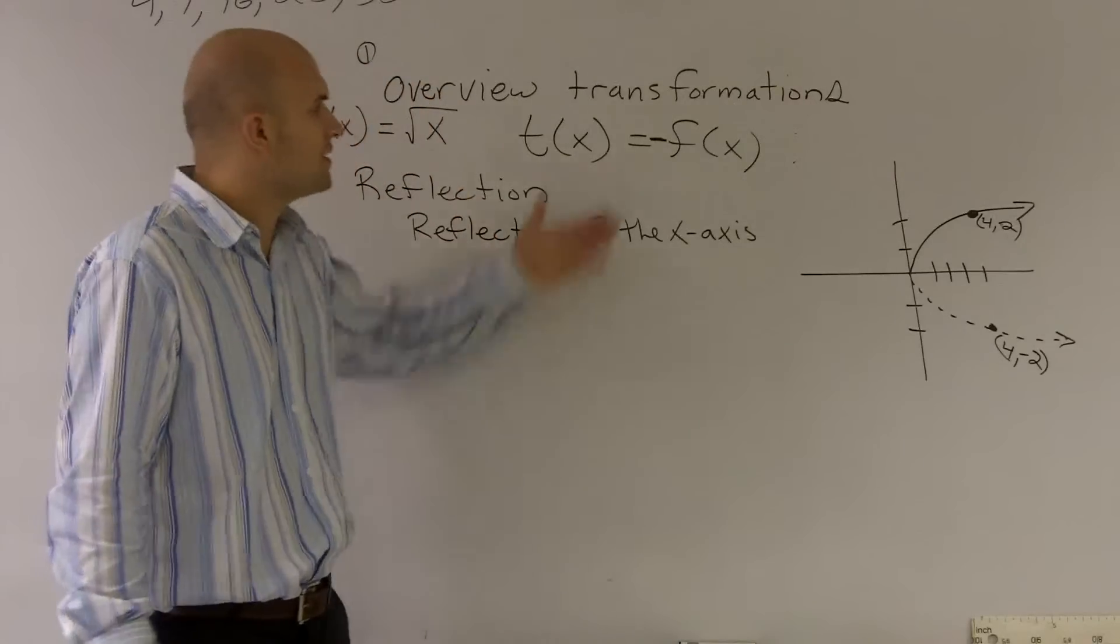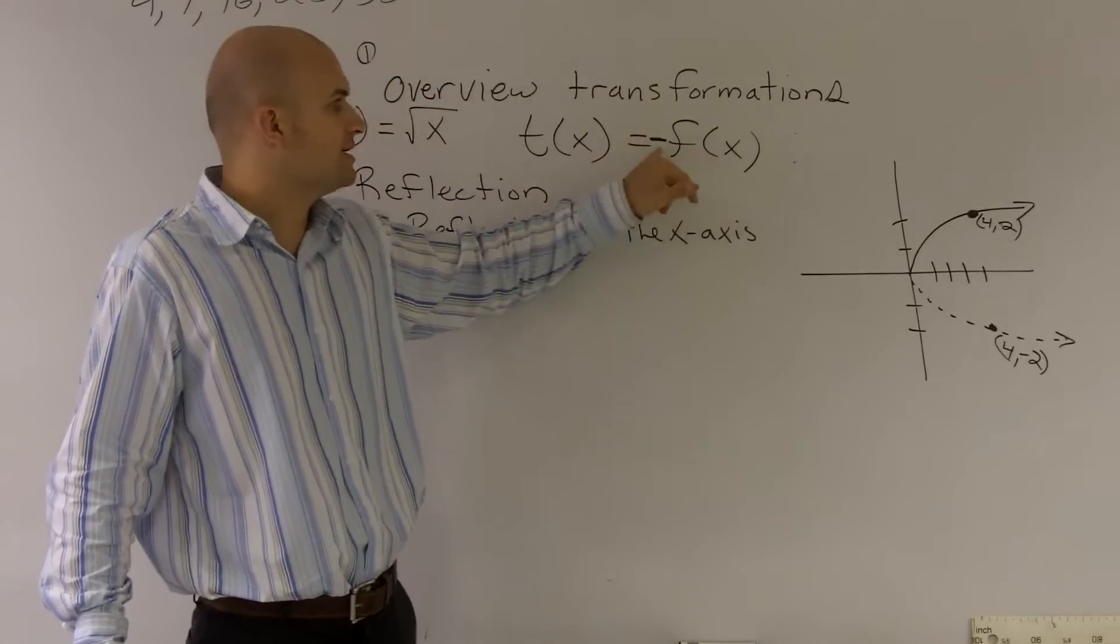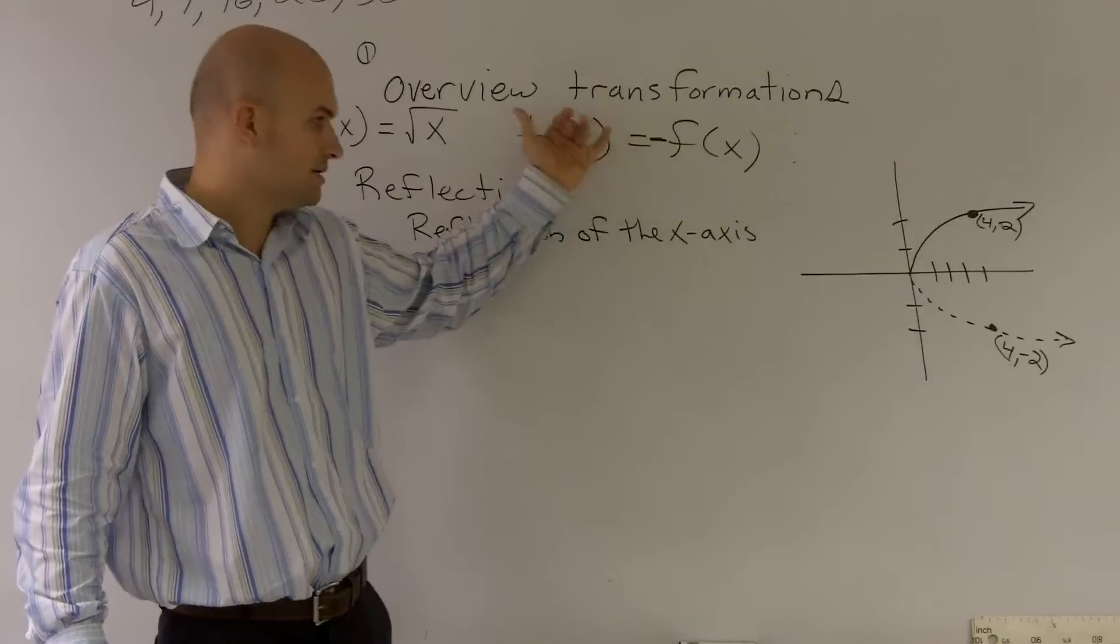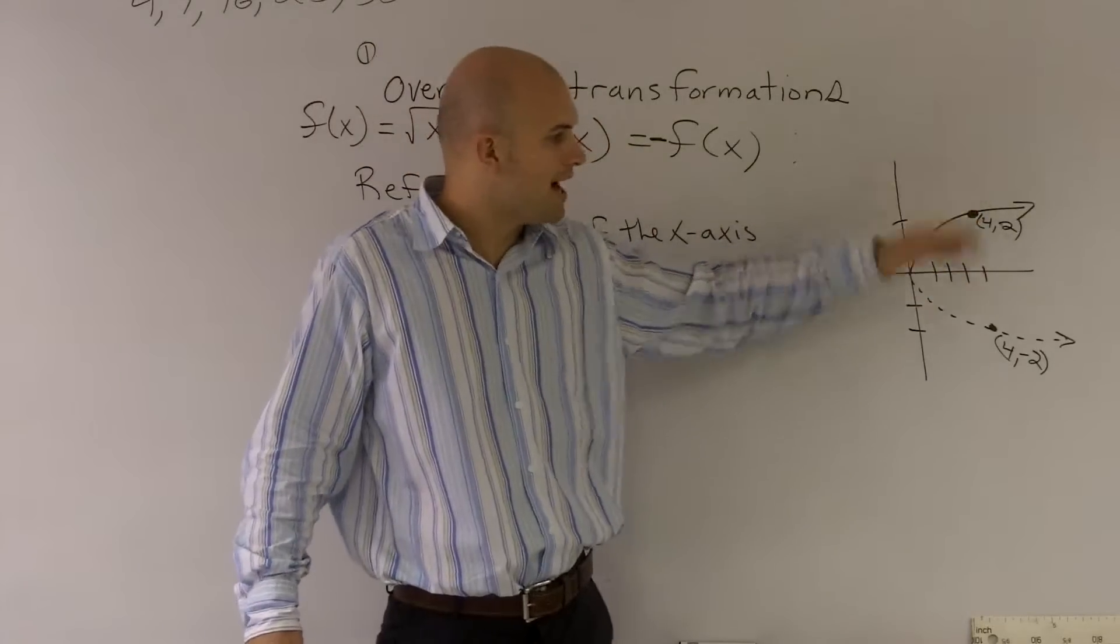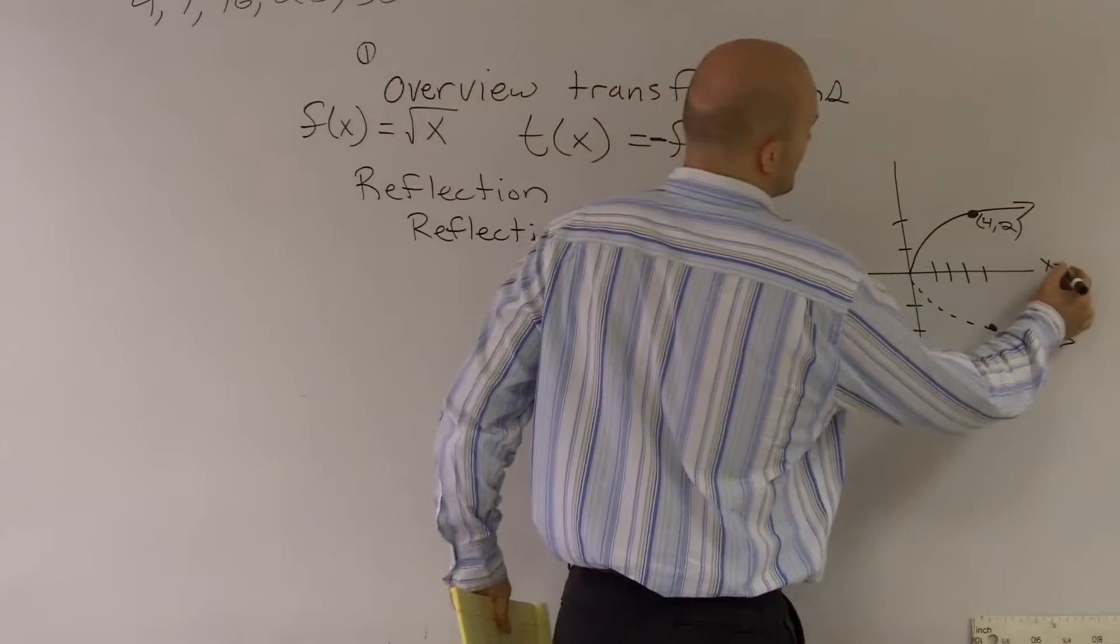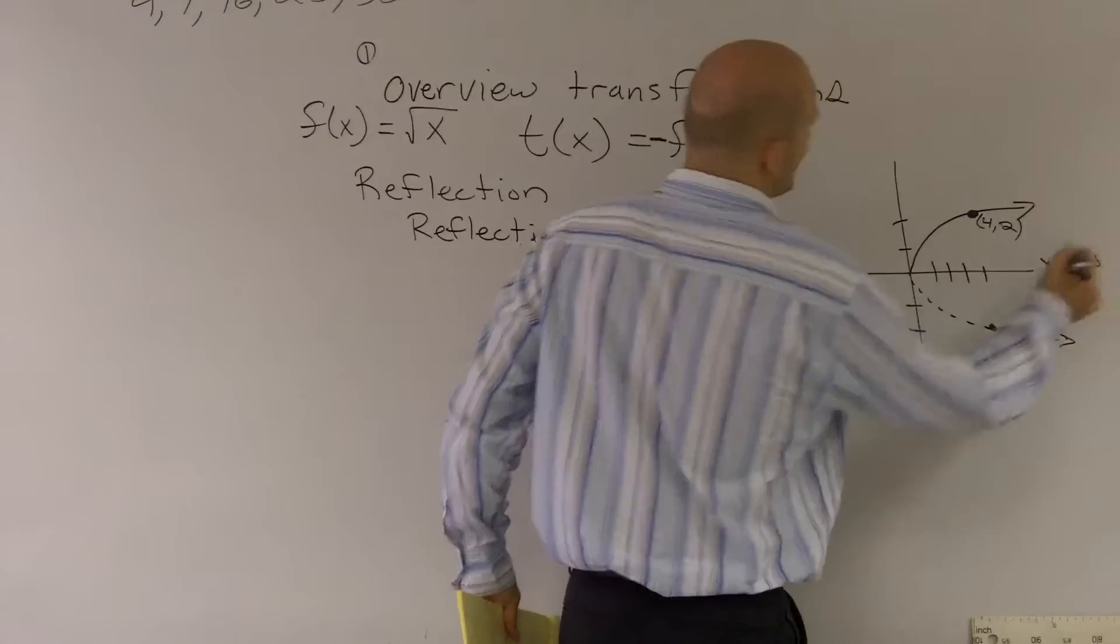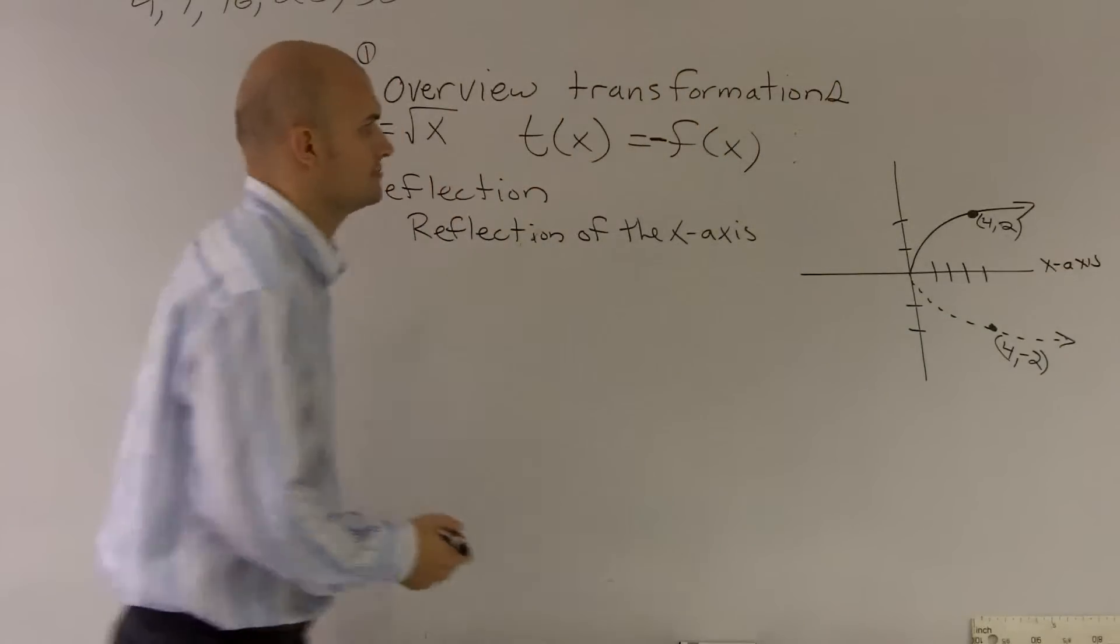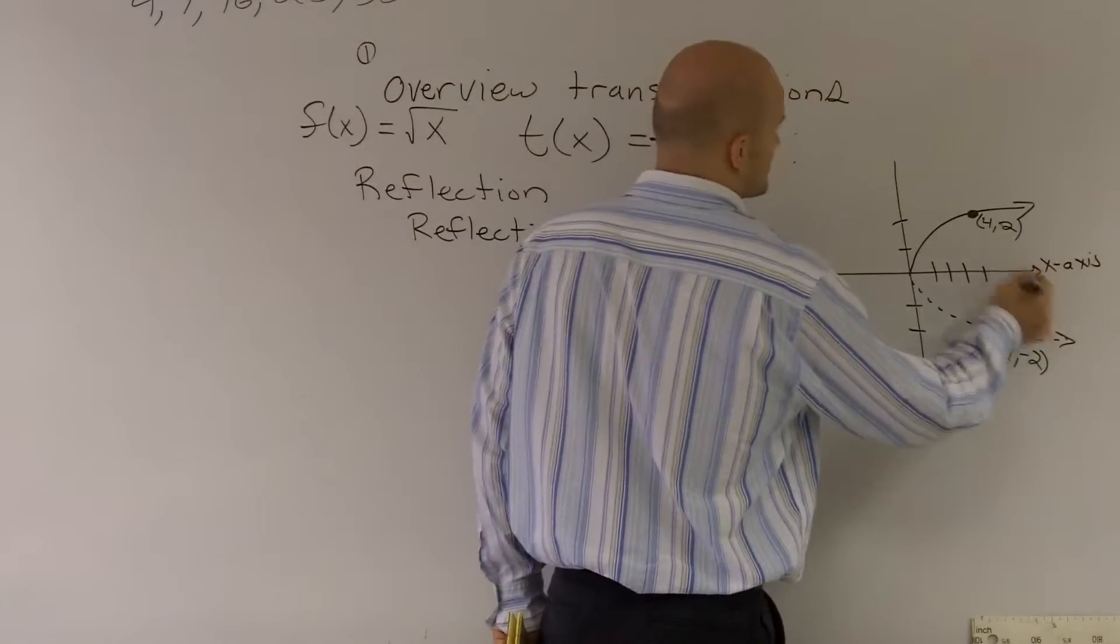So if you guys can remember, whenever you're multiplying a function by a negative 1, it is your y values that change from positive to negative. Therefore, giving you a reflection about the x axis. Let's throw some arrows in there, too.